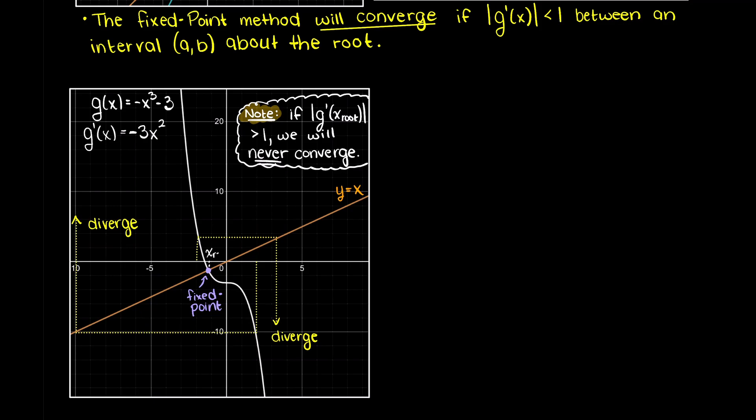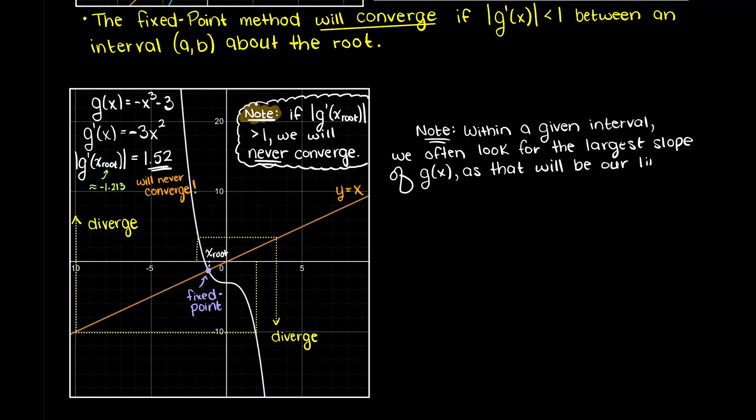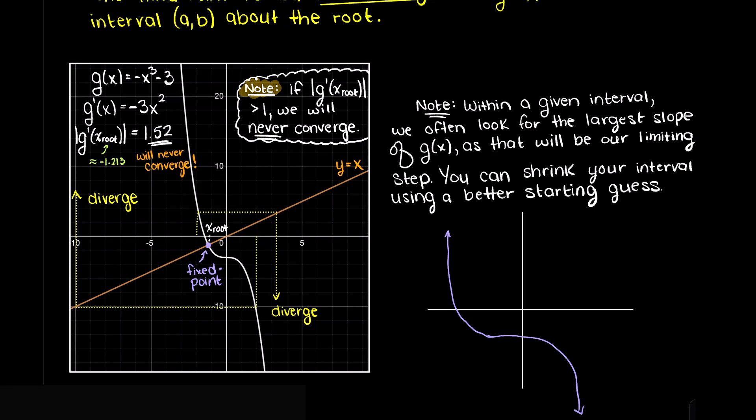So no matter how good our starting guess is, if our function's slope is greater than 1 evaluated at our root of interest, divergence will occur. So as you can see here, at the root our function's instantaneous rate of change is -1.52, which in absolute terms is larger than 1, and why convergence is not possible. We would therefore need to use another root solving method for this problem.